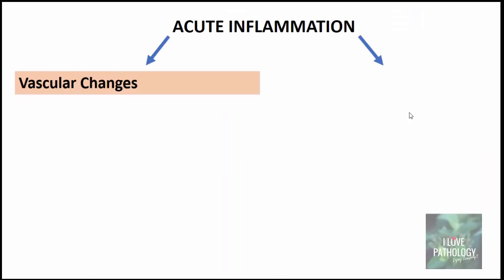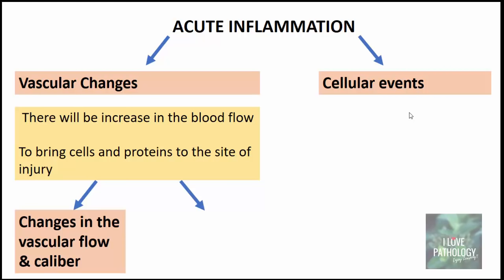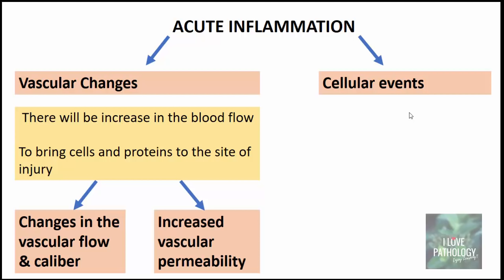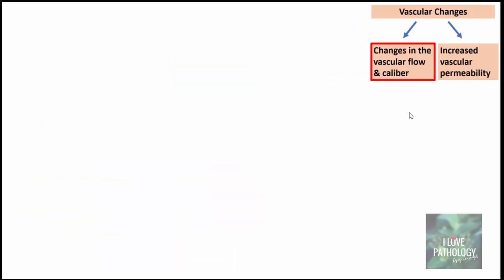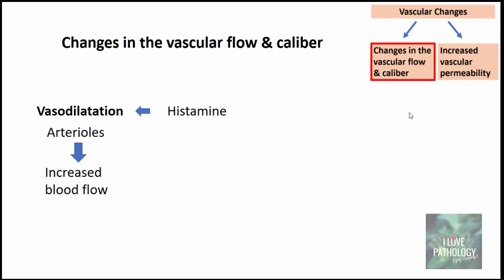Vascular changes in acute inflammation occur to bring cells and proteins to the site of injury and can be divided into two components: changes in vascular flow and caliber, and increased vascular permeability. As soon as tissue is exposed to an injurious agent, the first event is vasodilation, brought about by histamine, starting in arterioles and resulting in increased blood flow.